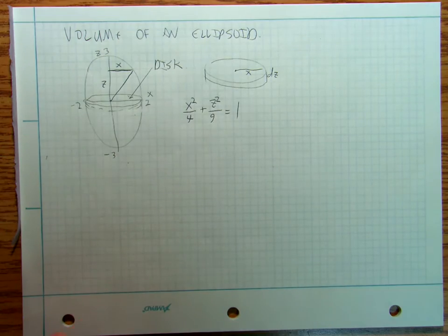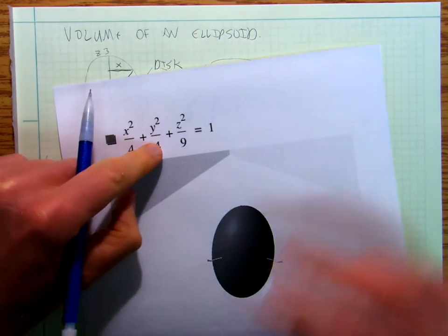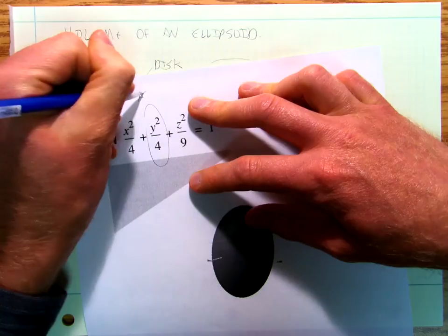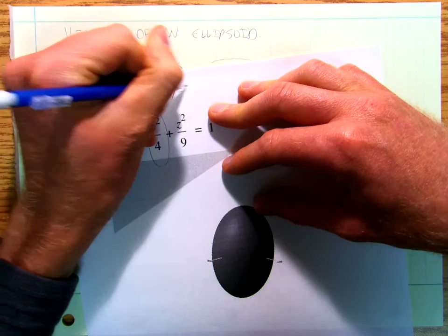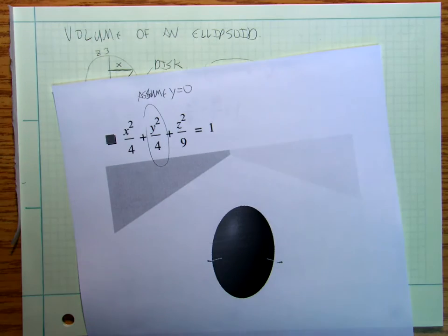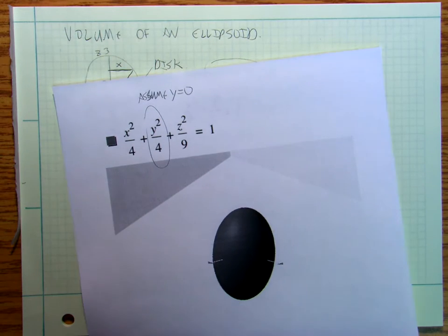And because it's circular, I don't really have to worry about this because we're just going to assume that y is 0, and it's all going to work out just fine.